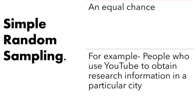The first type of sampling method we're going to look at today is called simple random sampling. This is a type of sampling where the researcher will randomly select participants from a population, meaning that everyone has an equal chance of being selected.